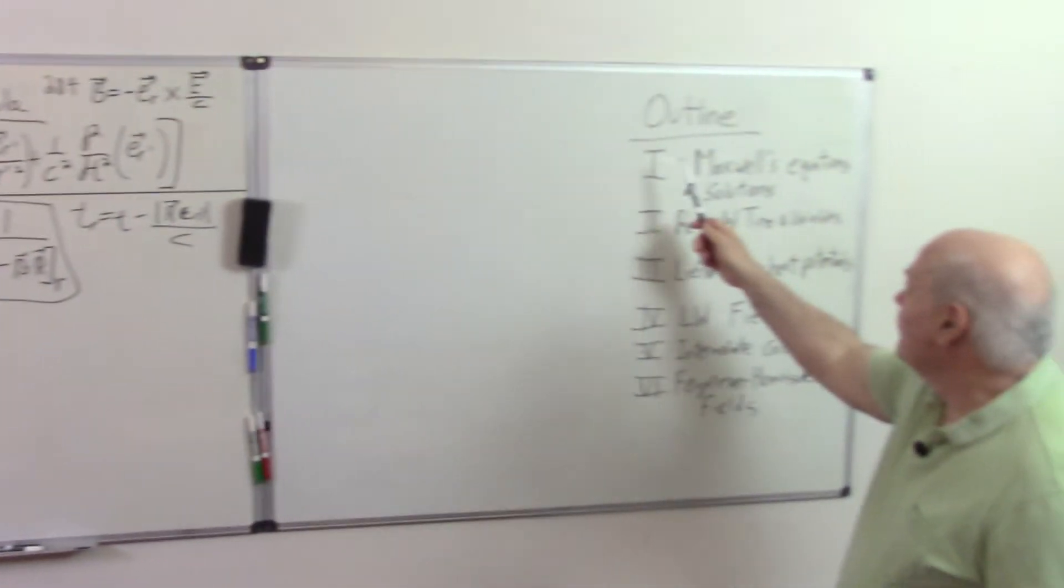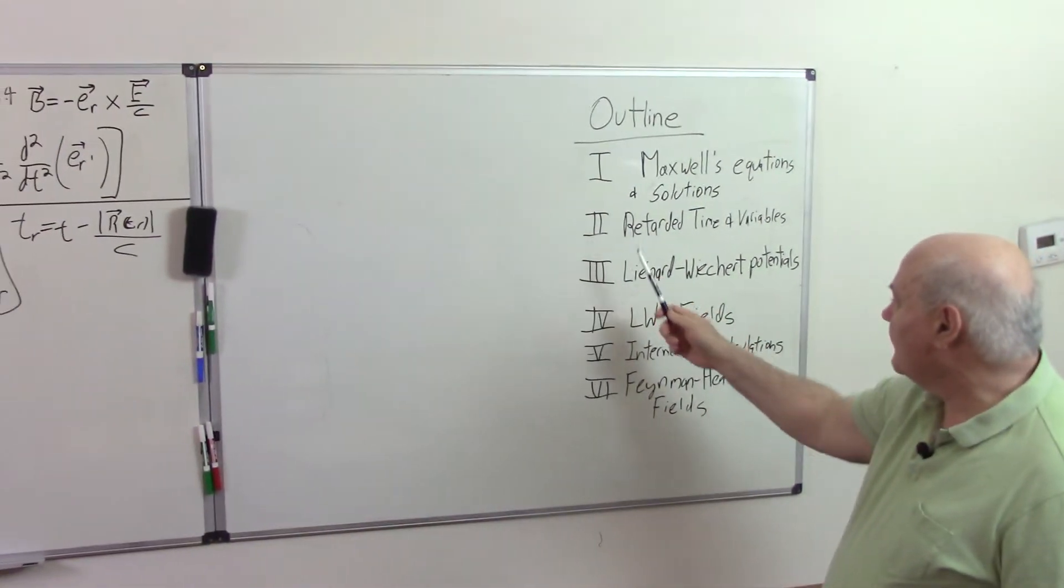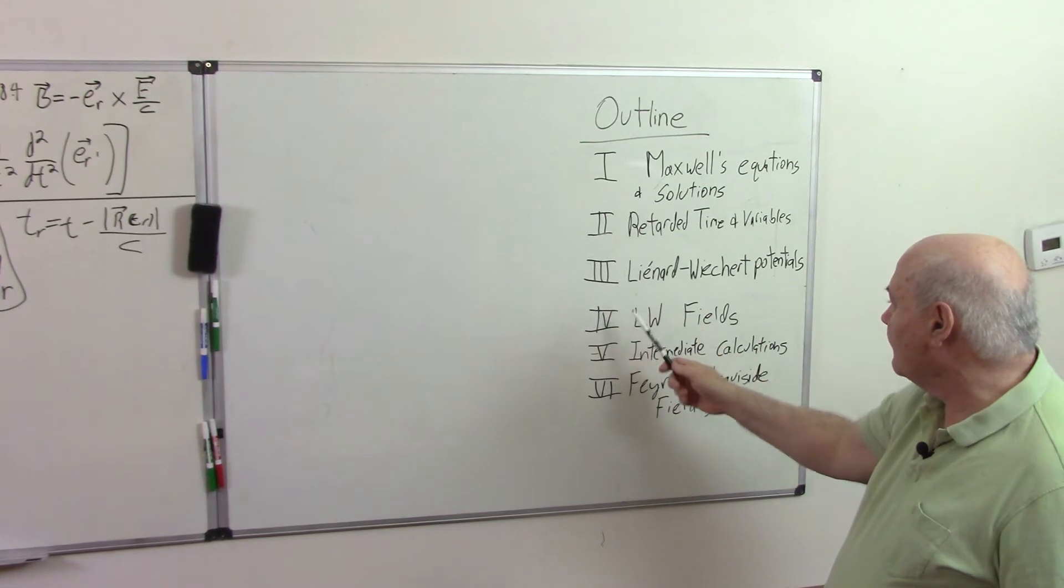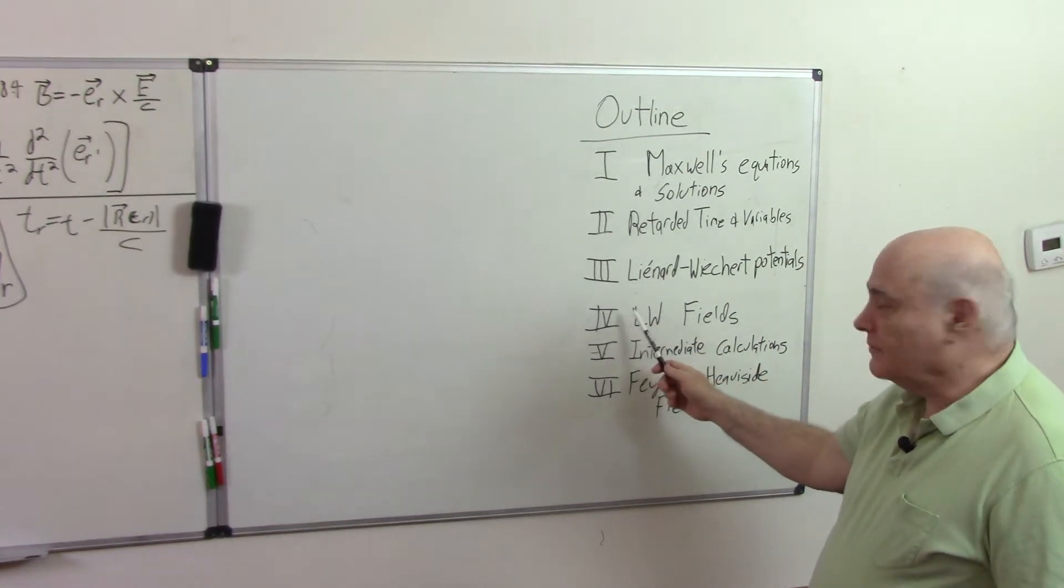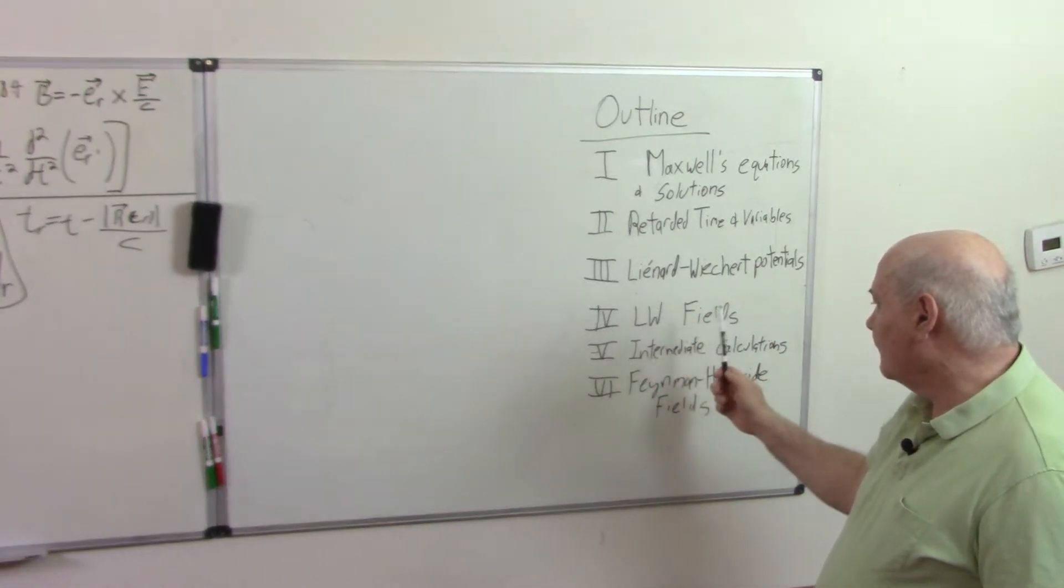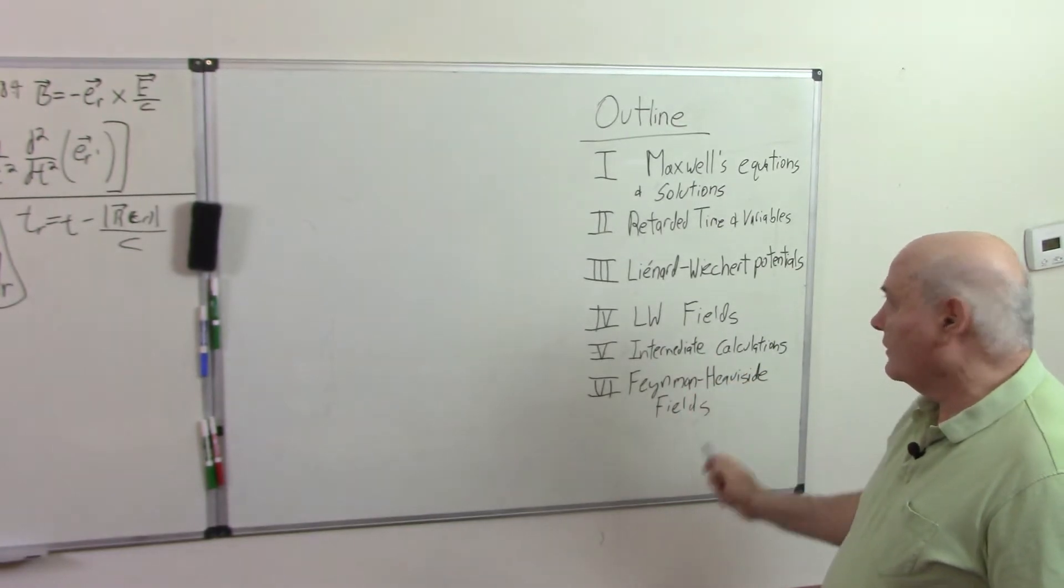So we've done Maxwell's equations, retarded time variables, Lienard-Wiechert potentials. I want to now derive a form of the Lienard-Wiechert fields and then on our way to the final formula.